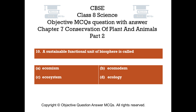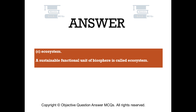Question number 10. A sustainable functional unit of biosphere is called: Option A Echimism, Option B Ecomodem, Option C Ecosystem, Option D Ecology. The right answer is Option C — Ecosystem. A sustainable functional unit of biosphere is called Ecosystem.